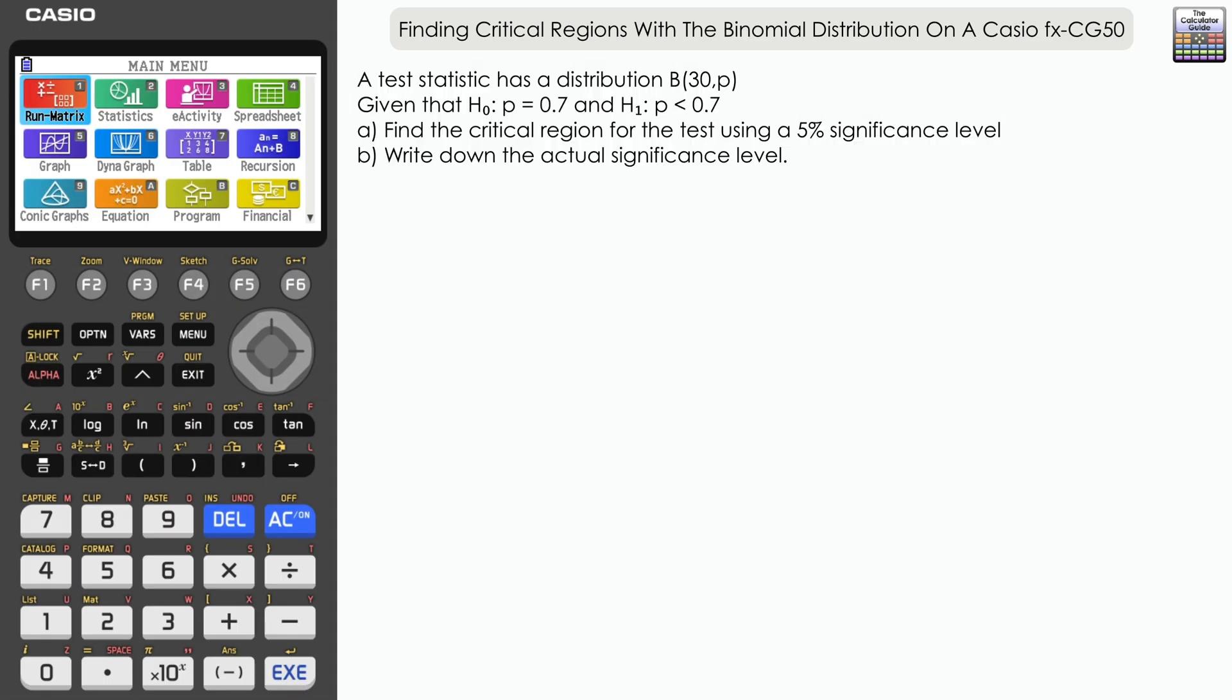We're going to be using the distribution app and in this video we're only going to be focusing on one-tailed tests: one with the lower tail and one with the upper tail. An example of a two-tail test will be explored in another video.